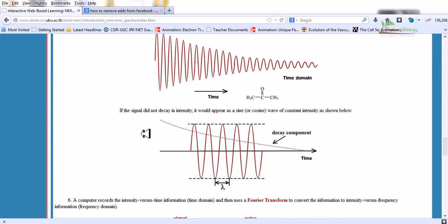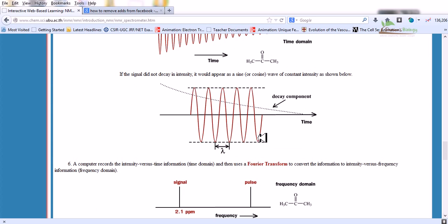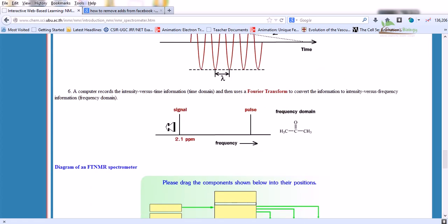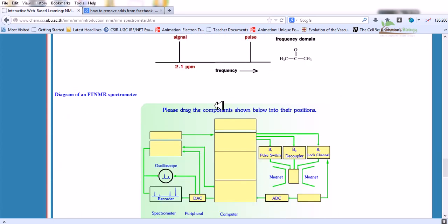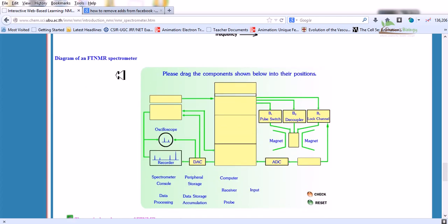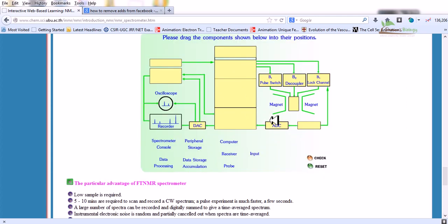First we are continuously applying the field. After adding this pulse, an amount of pulse will simultaneously hit the molecule and the atom will be turned to its very excited form. Then it will start to emit the energy and come down towards the equilibrium state as you can see here. If the signal did not decay in intensity, it would appear as a sine or cosine wave of constant intensity. A computer records the intensity versus time information and uses the Fourier transform to convert the information to intensity versus frequency domain. Finally we will have the graph of intensity over frequency after Fourier transformation.